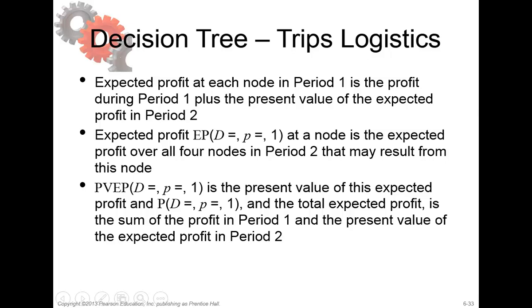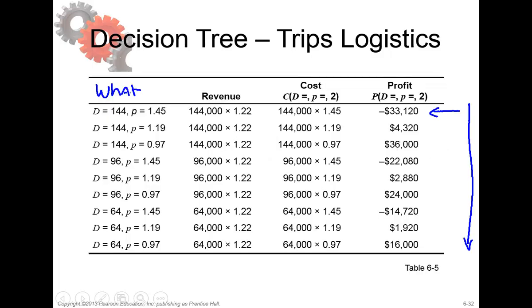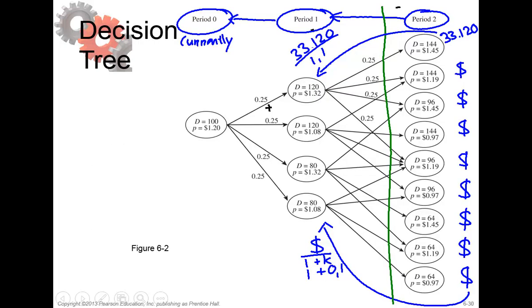But now we have to carry it back to the node in period 1. So that's what we are going to do now. We take the first node, and that is the node with demand 120 and the price on the spot market 1.32.